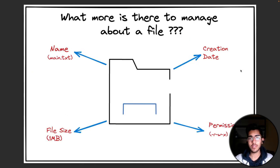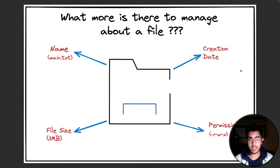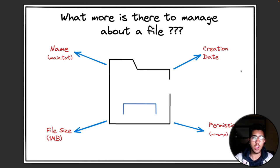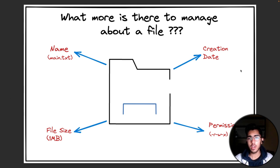Someone out there would definitely have this question in mind: 'Hey Kunal, what more is there to manage about a file? A file is a file which has some data in it.' So there are a few aspects here. Number one could be the name — for example, main.txt. The file could have a size, starting from 1KB, 1MB, going all the way to GB and sometimes TB as well. The file could have a creation date — when was it created. The most important is permissions: read, write, and execute — these are the three kinds of permissions that a particular file can have, and you can switch between them. These are some of the aspects of a file that the Linux file system actually manages for you.